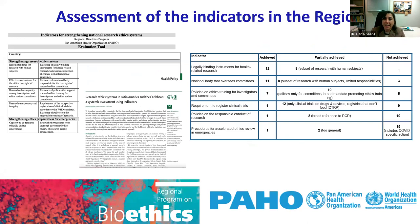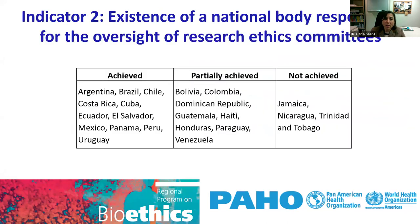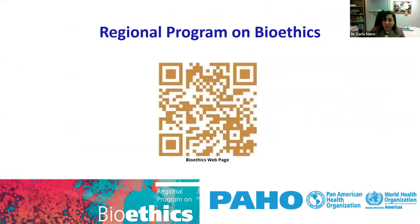If you go to the publication on indicators for strengthening national research ethics systems, you will see that you can download a tool — a chart for a national assessment. We have actually conducted, using this tool, an assessment of most of the region — including the 22 countries in Latin America and the Caribbean that have more than one million inhabitants. This has been published, I think in 2022 or perhaps early 2023. You can see that many countries in the region still have not fully achieved the indicator of having a national body that does the accreditation of committees, and some have not started at all. It is because of that — to support the accreditation process — that we have developed this tool.